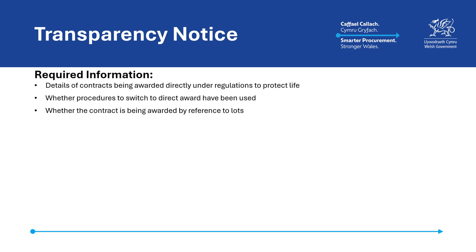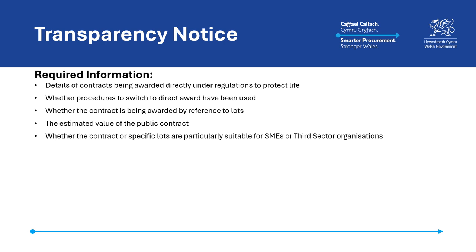Whether the contract is being awarded by reference to lots, and if so, the title of each lot and the distinct number given to each lot by the contracting authority. The total estimated value of the public contract. Whether the contracting authority considers that the contract or any lot forming part of the contract may be particularly suitable to be awarded to a small and medium-sized enterprise, or to a non-governmental organisation that is value driven and which principally reinvests its surpluses to further social, environmental, or cultural objectives, often referred to as a third sector organisation.